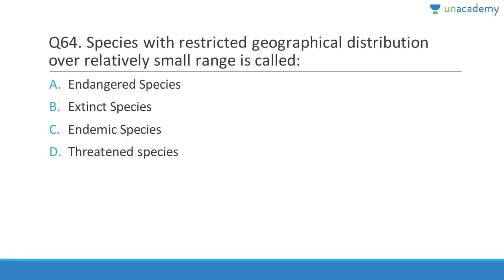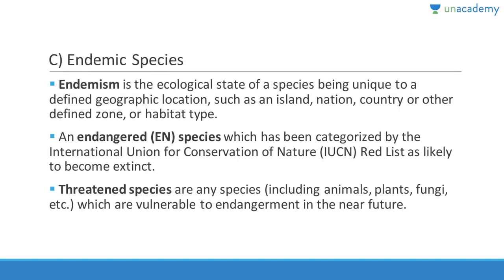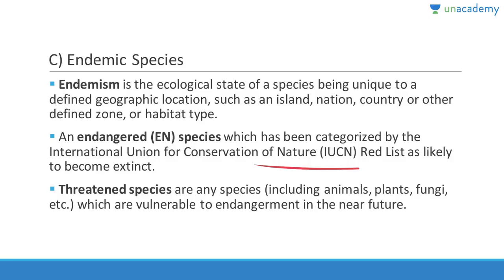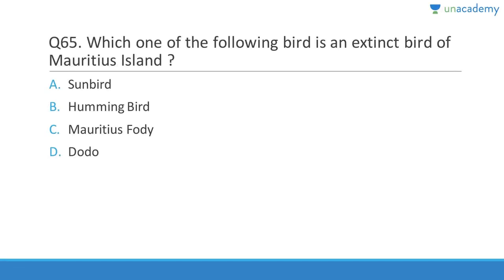Question 64: Species with restricted geographical distribution over a relatively small range are called endemic species. Endemism is the ecological state of a species being unique to a defined geographic location such as an island, nation, country, or other defined zone or habitat type. Endangered species are categorized by the IUCN Red List as likely to become extinct. Threatened species are any species vulnerable to endangerment in the near future.